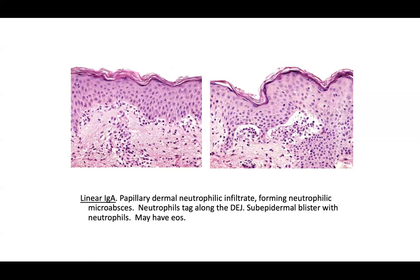As the name implies, the direct immunofluorescence here shows linear IgA along the basement membrane. Dermatitis herpetiformis in contrast shows granular IgA in the dermal papilla. You can see eosinophils in this case, which helps you remember that this is often a drug reaction — most often associated with vancomycin for test-taking purposes.